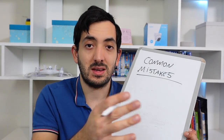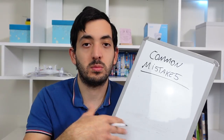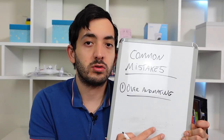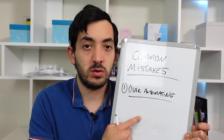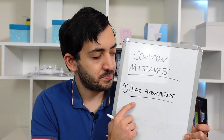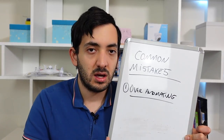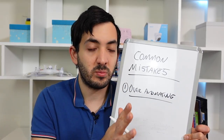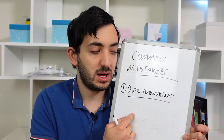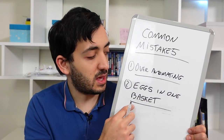Before you start your smart home journey, let me tell you about the common mistakes to watch out for. The first and most common mistake is over-automating. Over-automating causes a problem where you are owned by your smart home instead of owning it. You end up automating tasks that clearly don't need to be automated, creating complexity. Going back to the principle of simplifying your life — over-automating does the opposite — so be very careful not to go overboard.